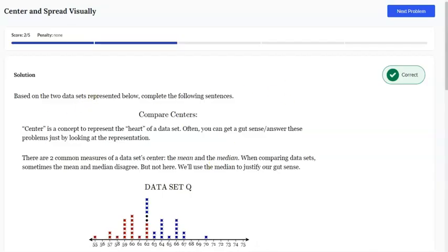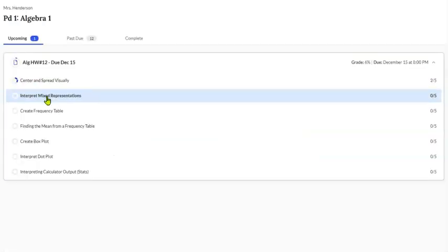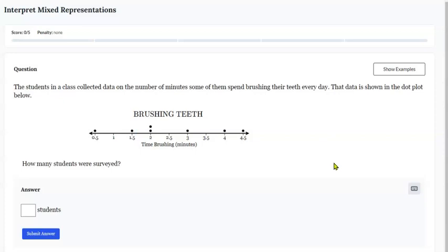Alright so that's the first topic there. We're going to take a look now at the second topic which is interpret mixed representations. So they're going to show you all different sets of data here. This one happens to be a dot plot and they're asking you how many students were surveyed. So this is a number line that shows the time that they brushed but the dots represent the amount of people that were surveyed. So you count up those dots one two four five six seven and you type that here.